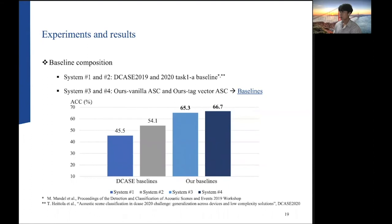This is the composition of the baseline systems. System 1 and 2 are the baselines for the DCASE 2019 and 2020 Task 1A. Each system shows an accuracy of 45.5% and 54.1%. System 3 and 4 are the results of our vanilla ASC and our tag vector ASC. Each reports an accuracy of 65.3% and 66.7%. Later, two systems are used as a baseline of this study.